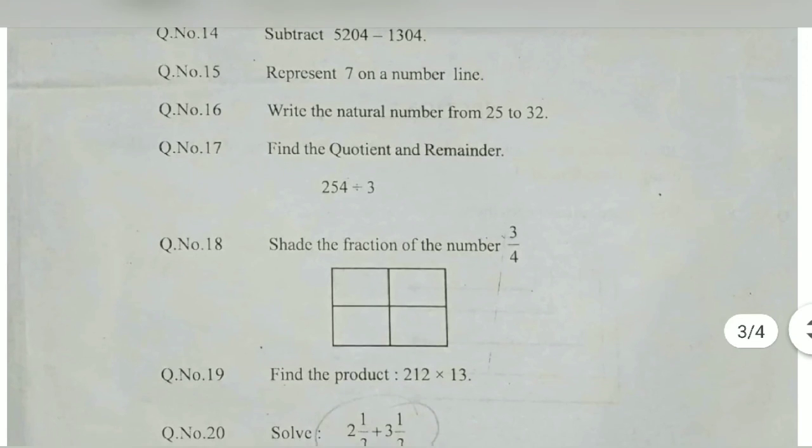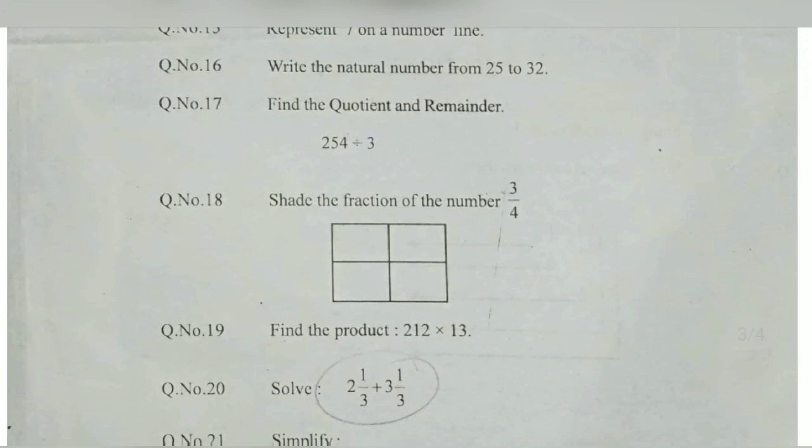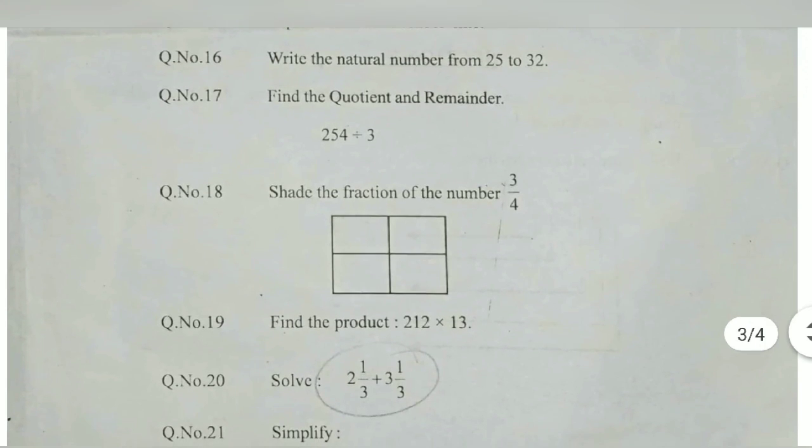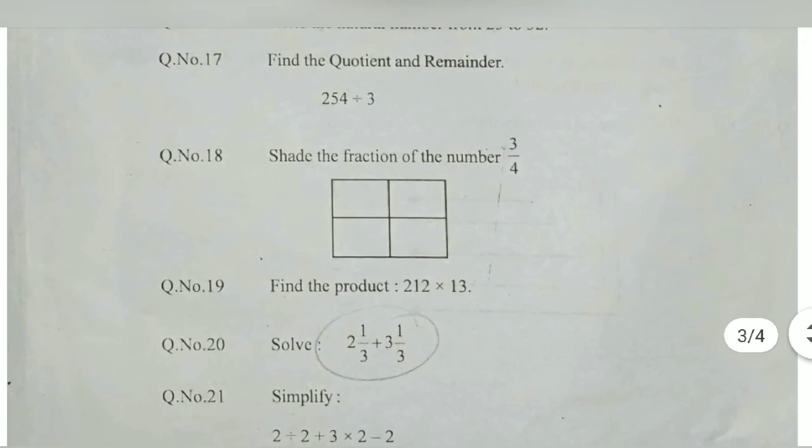Subtract 5200. The question is very easy - represent 7 on the number line. Draw the number line and represent that. Write the natural numbers from 25 to 32: 25, 26, 27, 28, 29, 30, 31, 32.